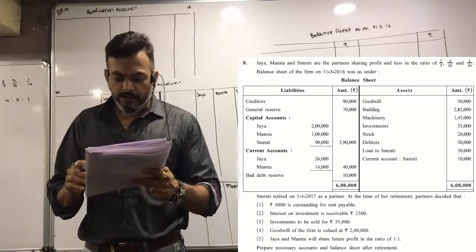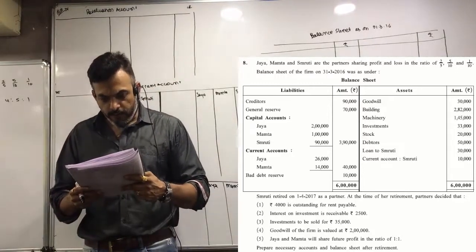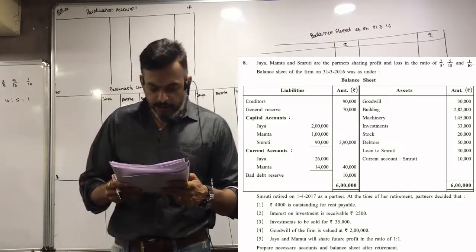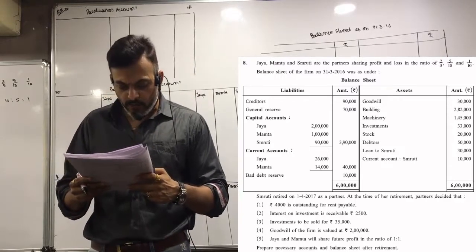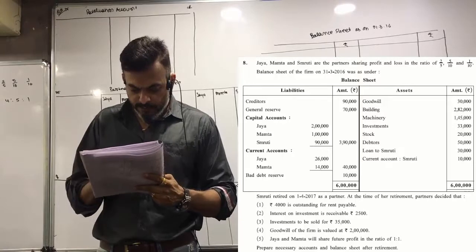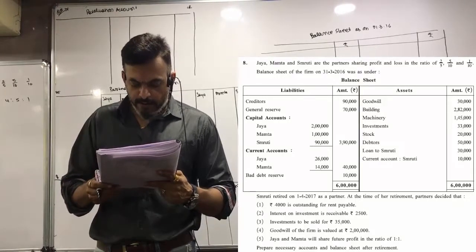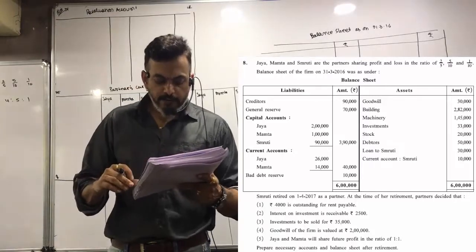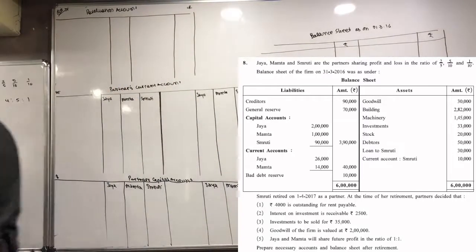At the time of retirement, partners decide that 4,000 is outstanding for rent payable, interest on investment receivable is 2,500, investment is sold for 35,000, goodwill of the firm is valued at 2 lakh, and Jaya and Mamata will share future profit in the ratio of 1:2.